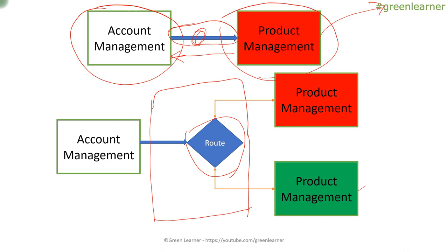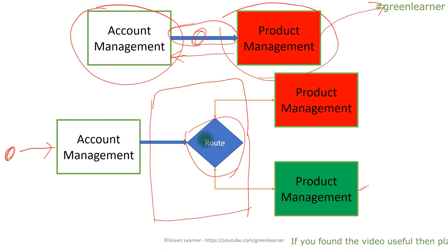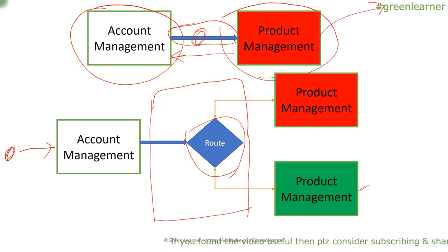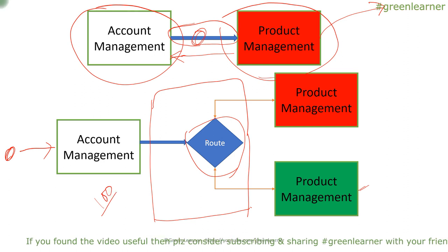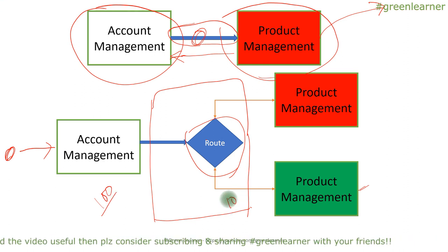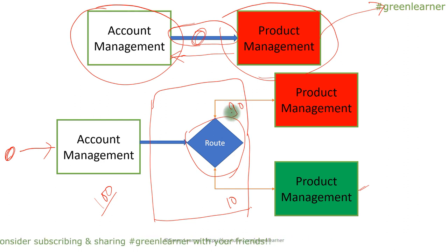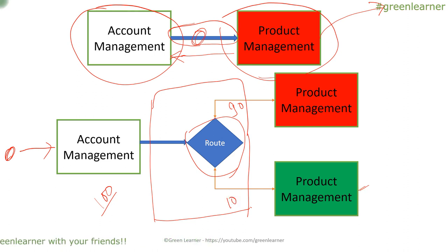Initially, when we are planning to put the Product Management microservice into production, this is the client calling Account Management. Account Management is internally deciding whether to call the old flow or the new flow. The initial strategy should be: out of 100 requests, 10 requests go to the new flow and 90 requests go to the old flow. With those 10 requests, we can monitor and observe the new Product Management flow to see whether it is working as expected.